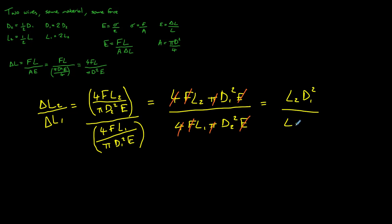And if we now substitute our values in from the beginning, this gives us L2 multiplied by 2D2 all squared divided by 2L2 multiplied by D2 squared. And if we square out our brackets there, we'll get 4L2 D2 squared divided by 2L2 D2 squared.